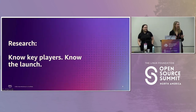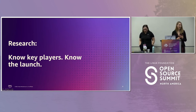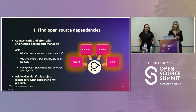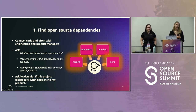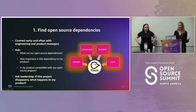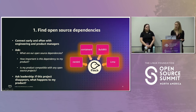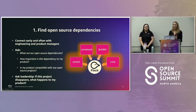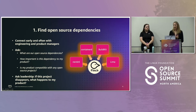The first step in a product launch is doing your research — know the key players and know the launch. You want to learn the story behind your product, the problem it solves, its technical capabilities, competitors in the market, what differentiates your product, and who the potential users are. As you're doing this standard product marketing research, it's a perfect opportunity to ask: are there any open source dependencies for my product? Dependencies are the software components your software is built on that provide critical functionality to your product.